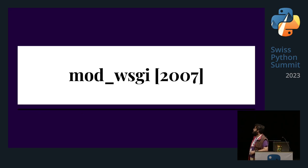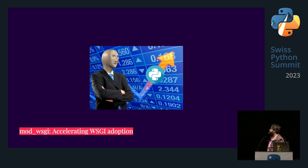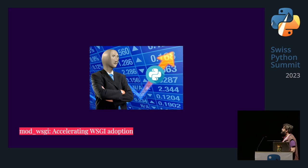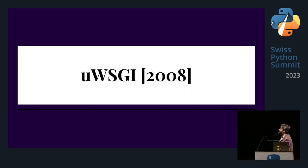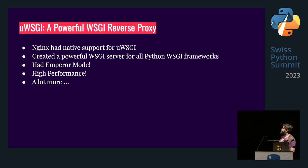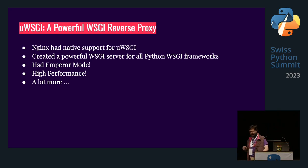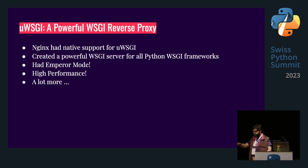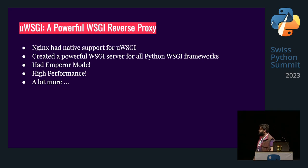In 2007, mod_wsgi came out — a mod for the Apache server that allowed you to run WSGI applications via Apache. This really catapulted Python web framework usage in production. In 2008, we had uWSGI, which had native support for Nginx. It was extremely powerful, with something called emperor mode — you could have uWSGI servers that are vassals of other uWSGI servers, kind of like microservices, although microservices weren't really a thing back then.